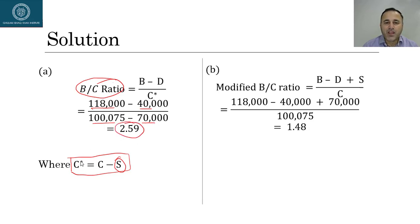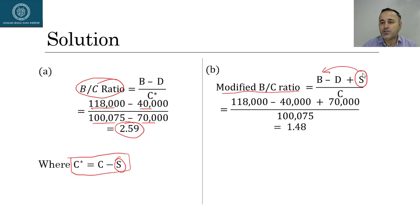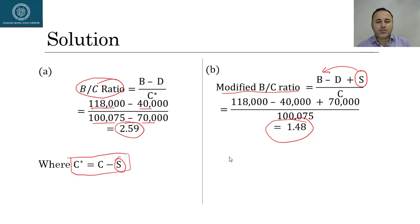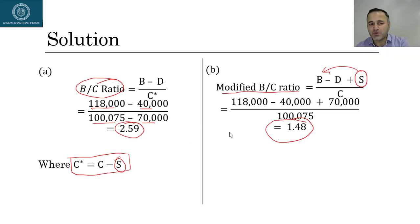For the modified BC ratio, savings are treated as a benefit to the public, so instead of placing savings in the denominator we move them to the numerator. The modified BC ratio is (B − D + S) / C = (118,000 − 40,000 + 70,000) / 100,075 = 1.48. When given a question, I will specifically mention whether the modified or conventional BC ratio is required. The main difference between conventional and modified BC ratio is the treatment of savings.